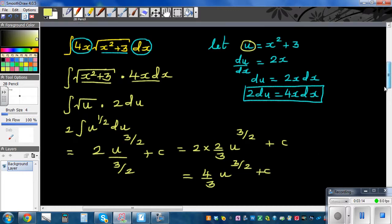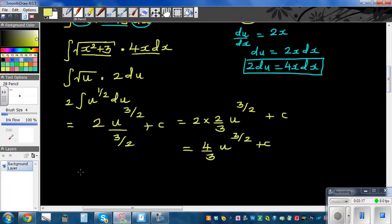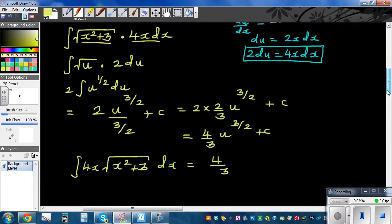Let's put back what u is. The integration of 4x times square root of x squared plus 3 dx is equal to 4 over 3—what is u? u is x squared plus 3—so this is x squared plus 3 raised to 3 halves plus C.